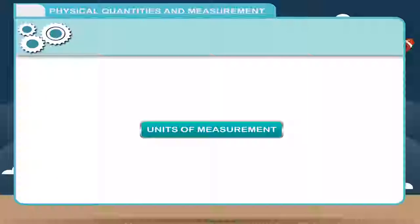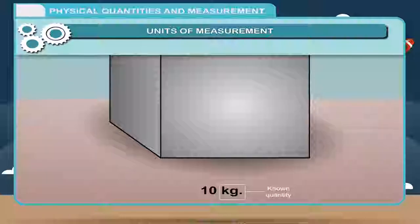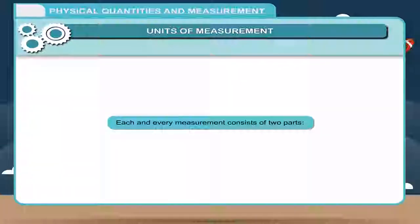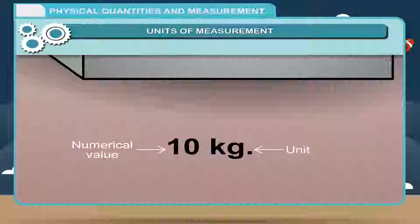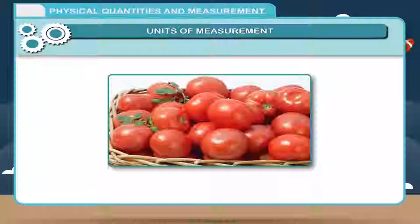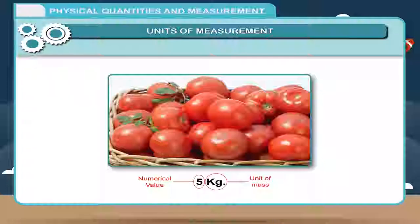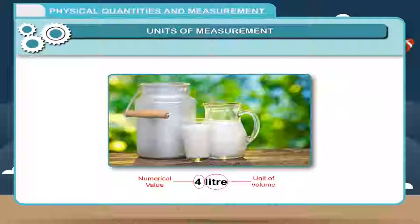Units of Measurement: Measurement requires the comparison of an unknown quantity with some known fixed quantity of the same kind. This known fixed quantity is called the unit. Each and every measurement consists of two parts: 1. A number called numerical value, and 2. A symbol or alphabet that denotes the unit associated with it. For example, when we say the quantity of tomato is 5 kilograms, then 5 is the numerical value and kilogram is the unit of mass. If the amount of milk is 4 liters, then 4 is the numerical value and liter is the unit of volume.